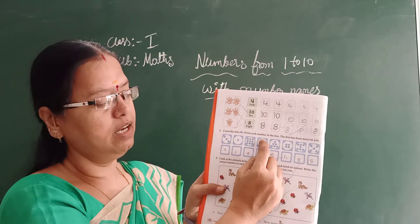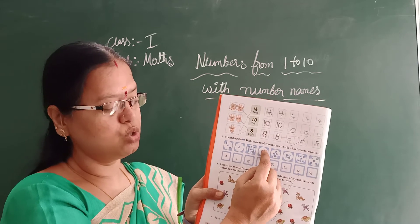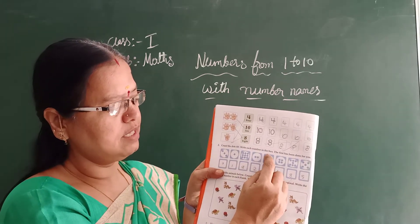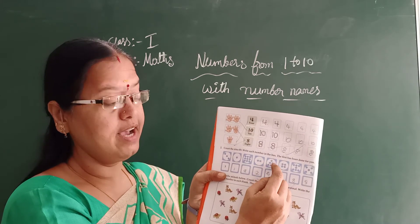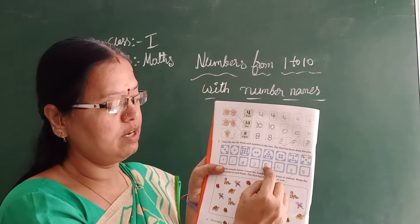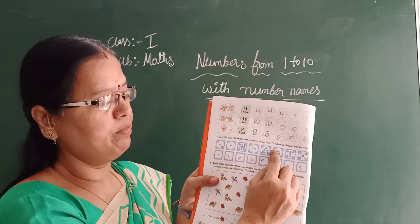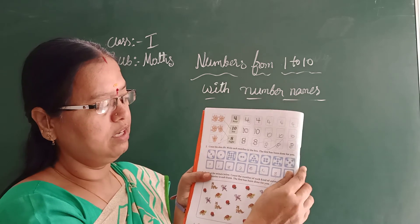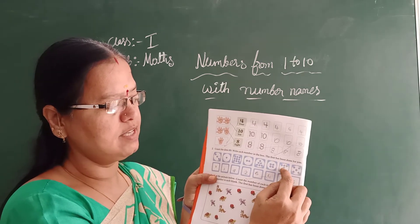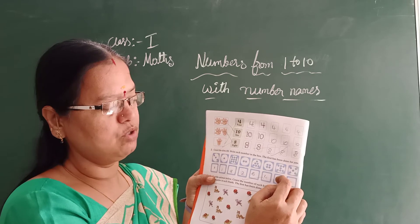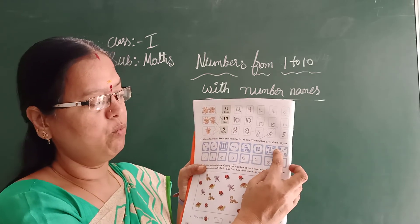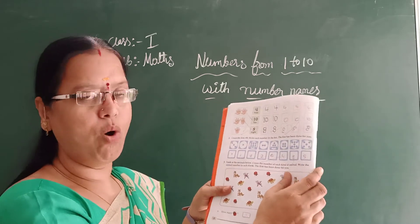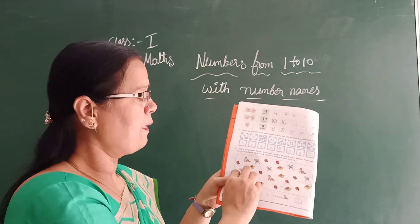Next — how many dots are there? 1, 2 — write 2. Here — 1, 2, 3, 4, 5, 6 — total 6 dots, write 6. And how many? 1, 2, 3, 4 — write 4 in the box. And here — 1, 2, 3, 4, 5, 6, 7 — write 7. And 1, 2, 3, 4, 5 — now count and write in the boxes neatly and come to the next one.